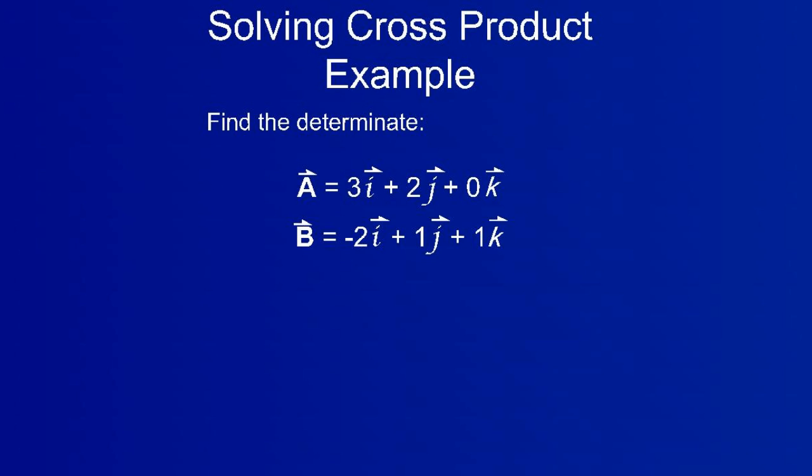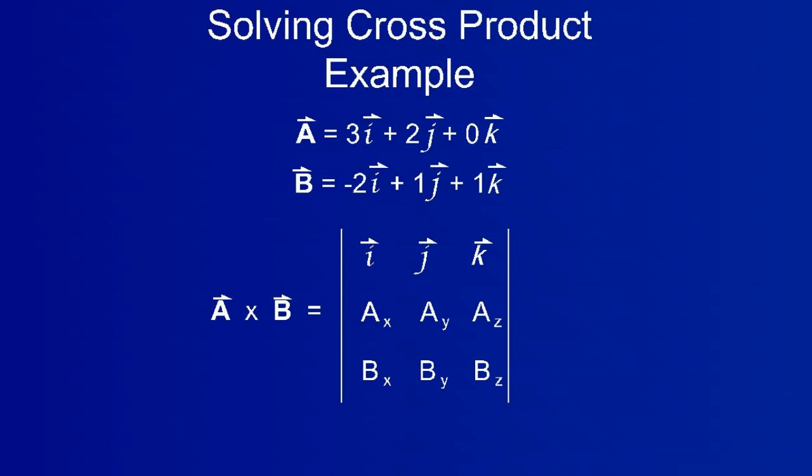Let's work an example. Given our two vectors, A and B, recognize that the determinant of the vectors is the calculation for the cross product.